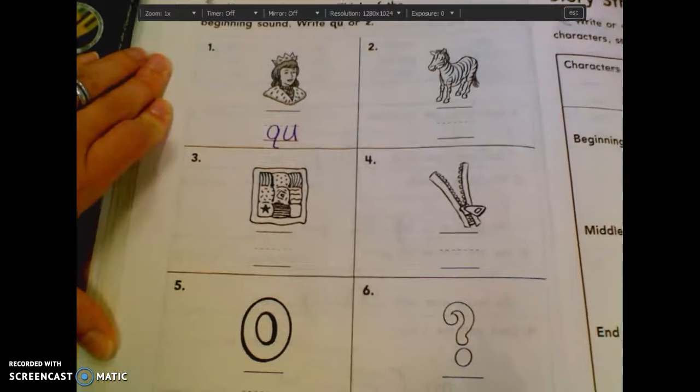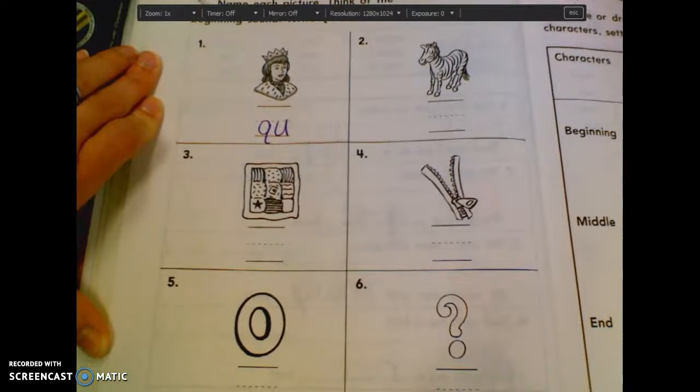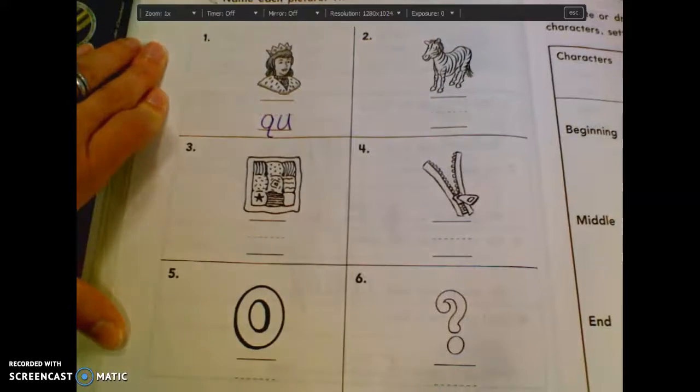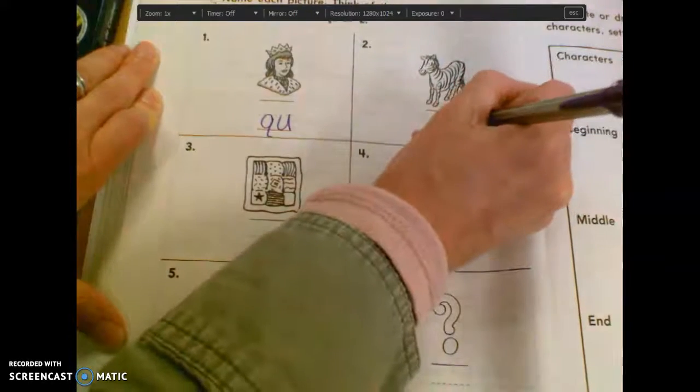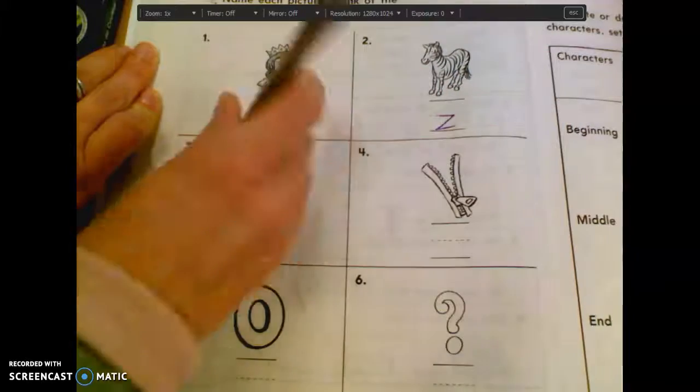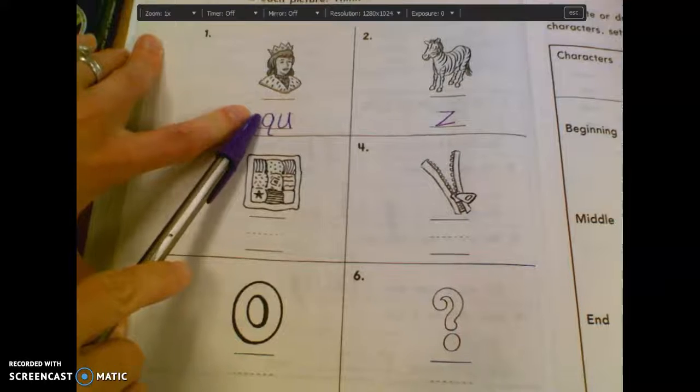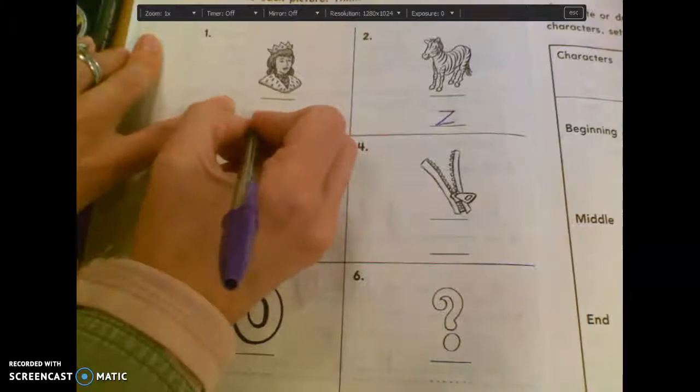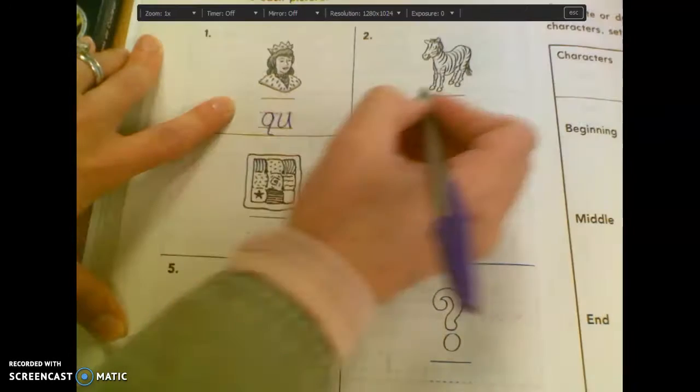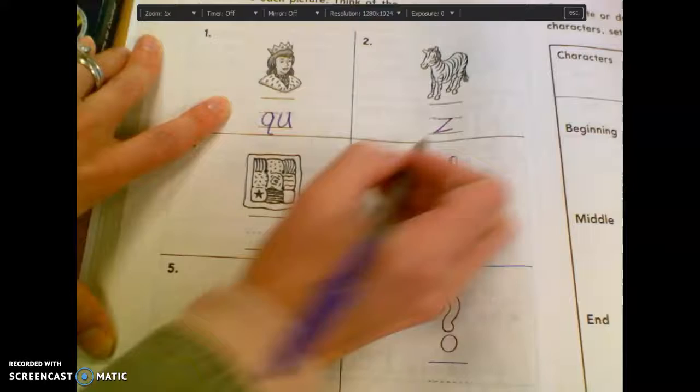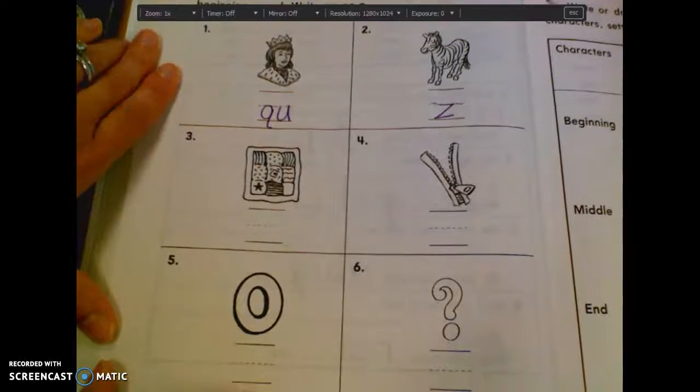Number two. What is that a picture of? Jordan? Zebra. That starts with a Z. Make sure to use lowercase letters. So all of your letters should stay below this little midline right here because they are lowercase letters. Should not go up to the top of the line.